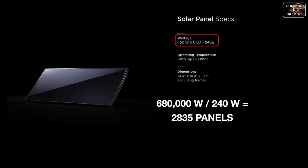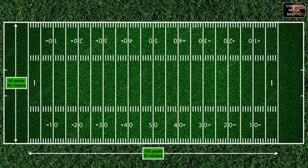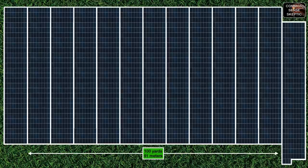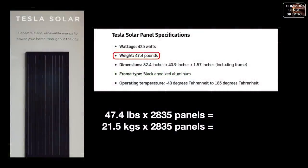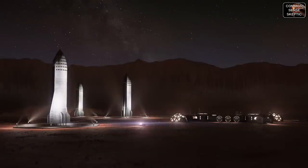680 kilowatts divided by the 240 watts each solar panel can produce at peak gives a required total for this process alone of 2835 solar panels. At 21.3 square feet (2 square meters) per panel, that is a minimum footprint of 1.4 acres or 5,670 square meters. At 47.4 pounds (21.5 kilos) per panel, that's approximately 61 metric tons just for the panels.